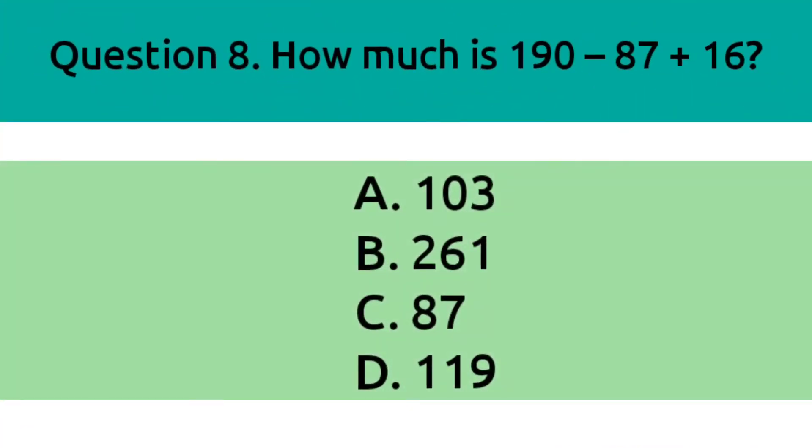Question 8. How much is 190 minus 87 plus 16? Option A, 103. Option B, 261. Option C, 87. Option D, 119. And the correct answer is Option D, 119.